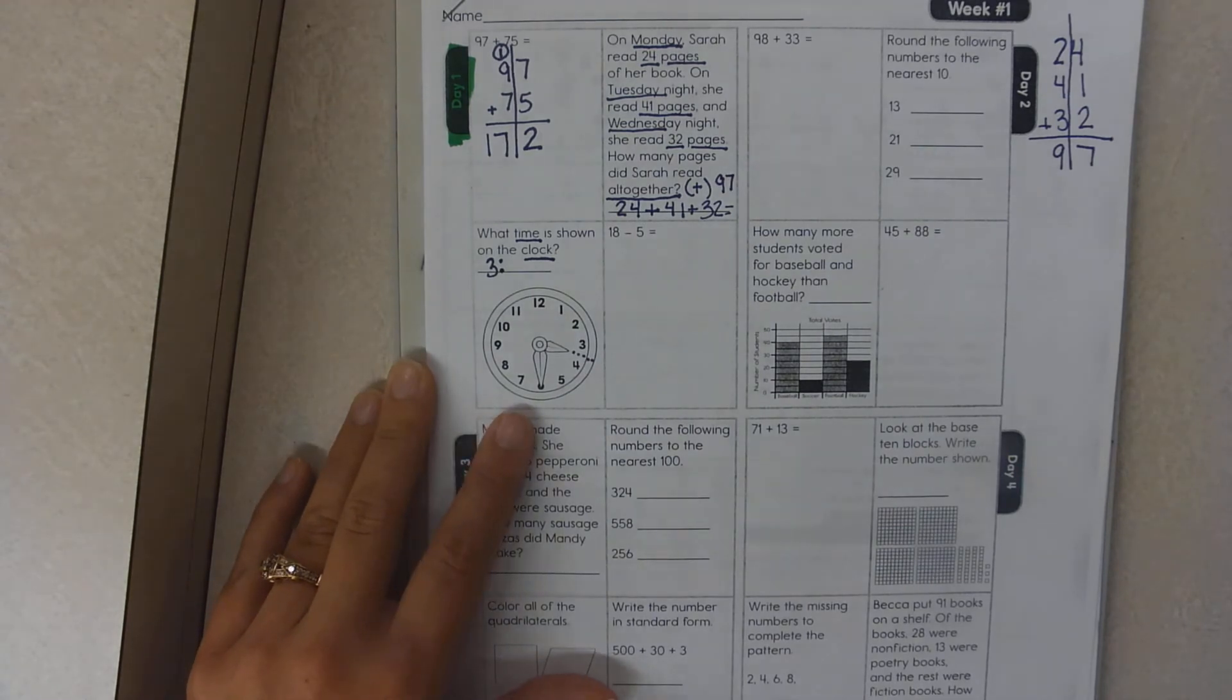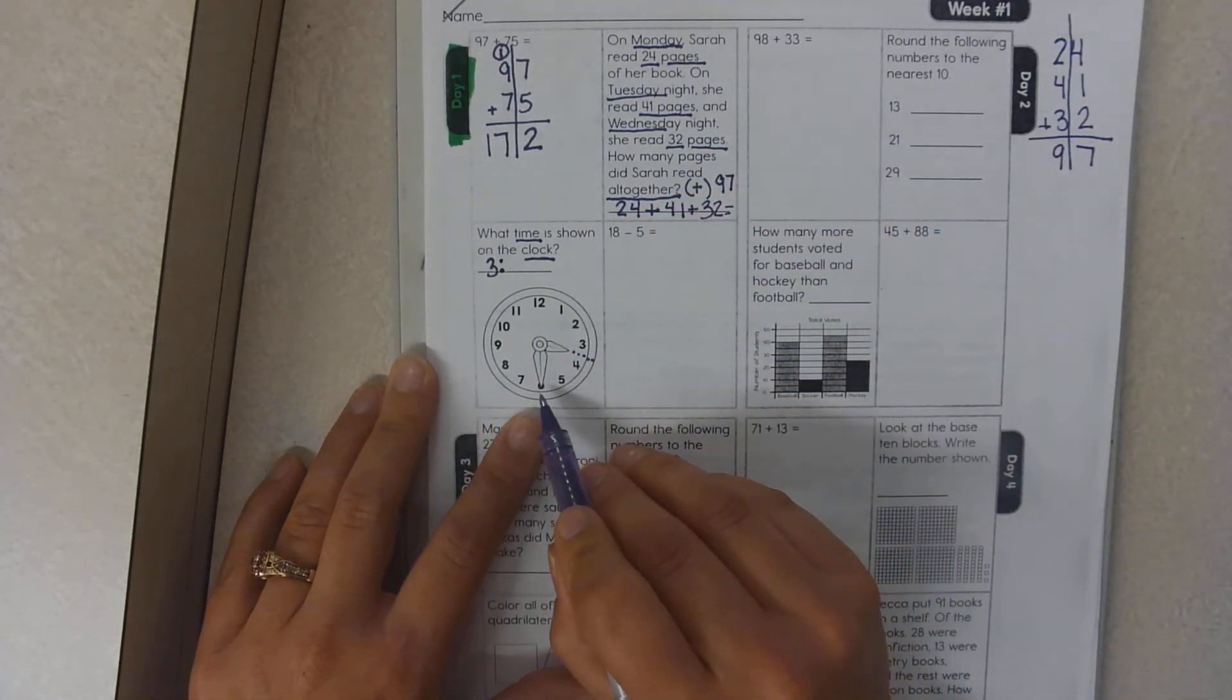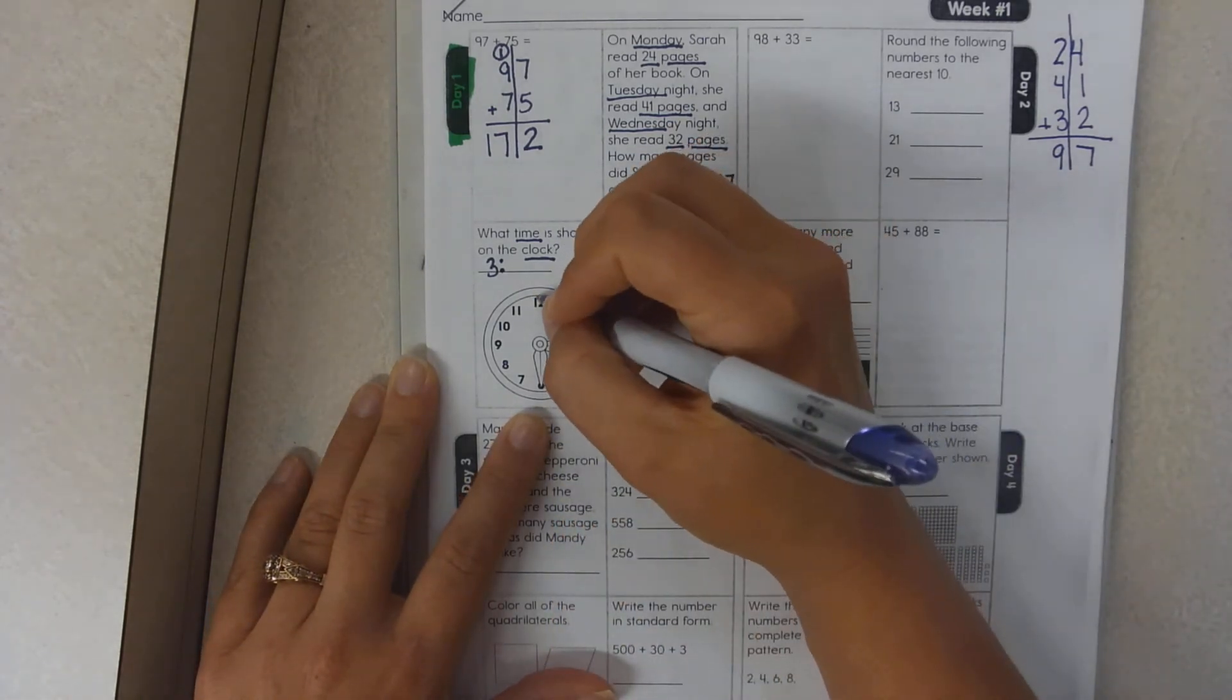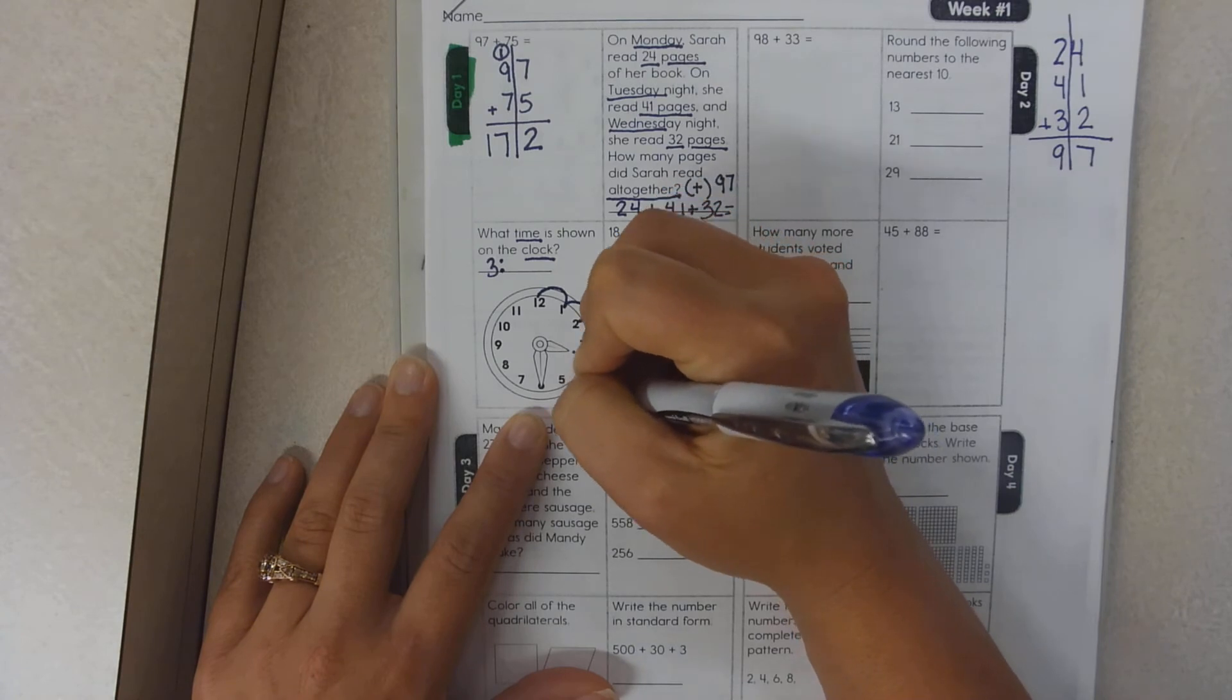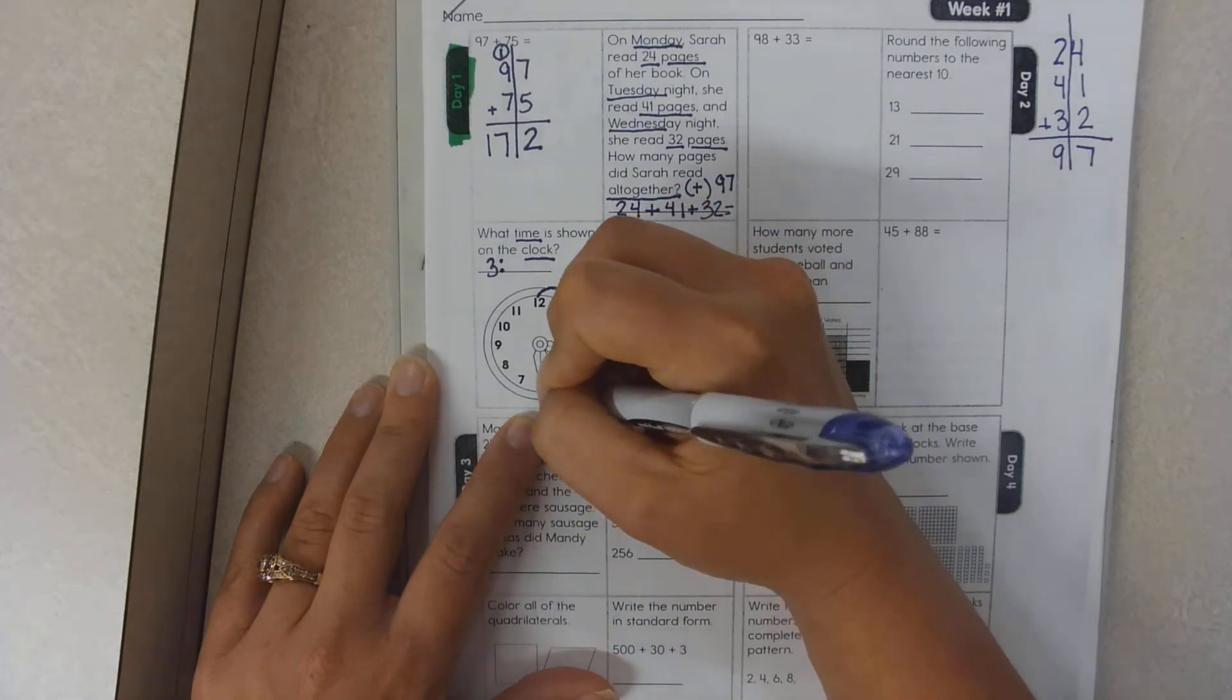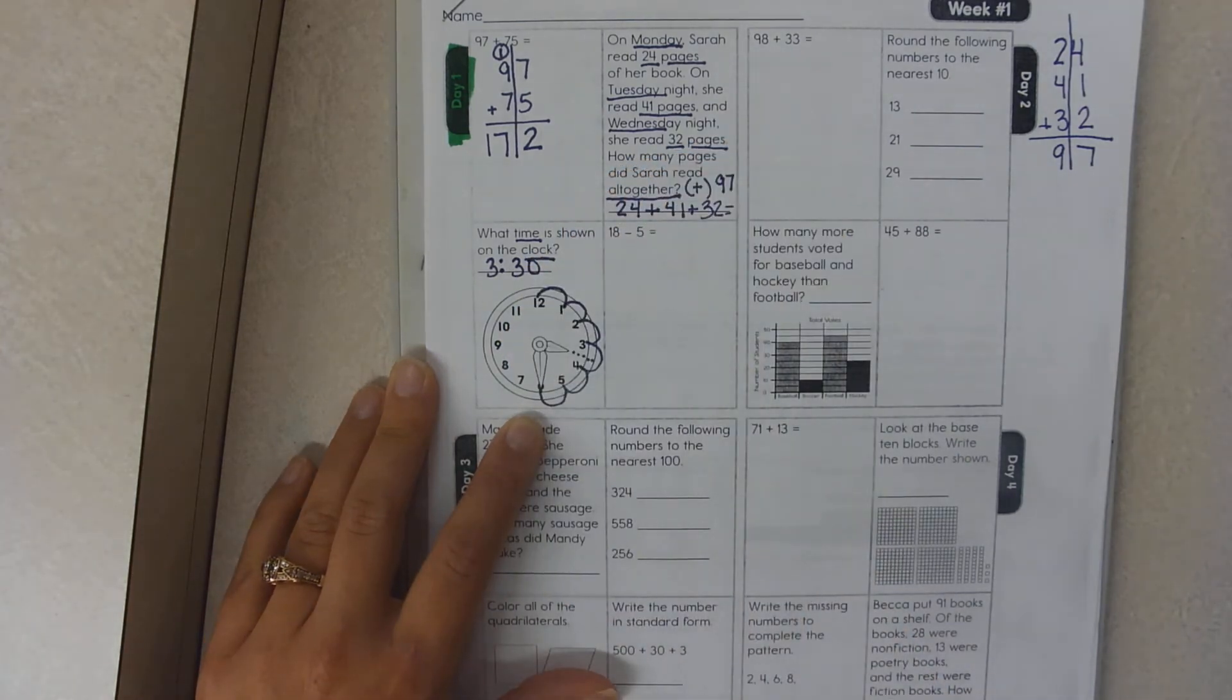From there, you count by fives unless you already know this. So 5, 10, 15, 20, 25, 30. It is 3:30.